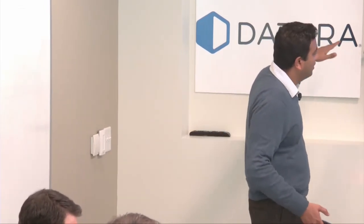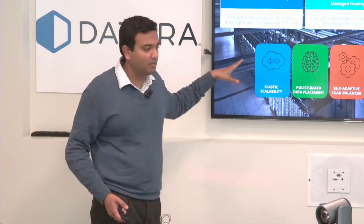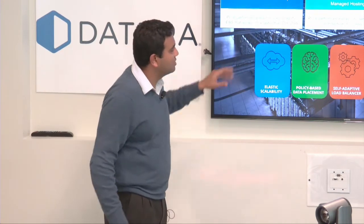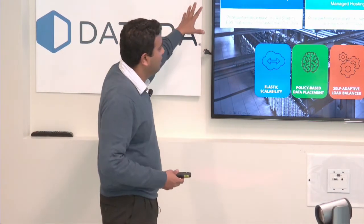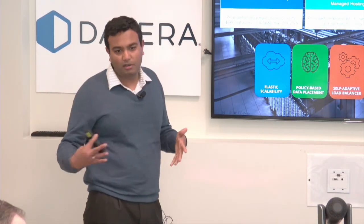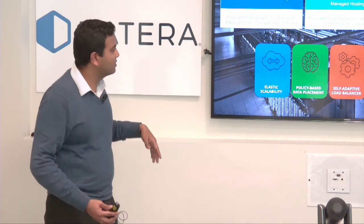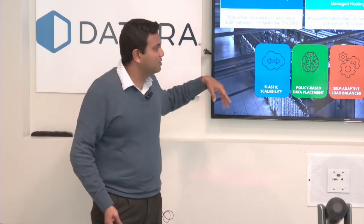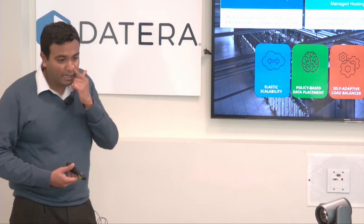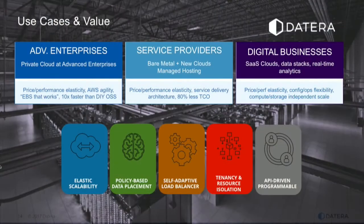Classic enterprise capabilities are important but in the cloud, flexibility and agility are becoming imperative. The use cases we're going after are fairly large clouds — advanced enterprises building clouds for their dev or analytics environments, tier two and tier three service providers, digital businesses, SaaS companies, ad tech, and fintech companies. For all of them, IT is a core competency and they want to offer unique services to their customers.